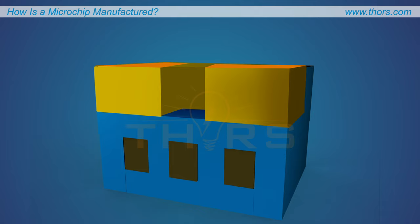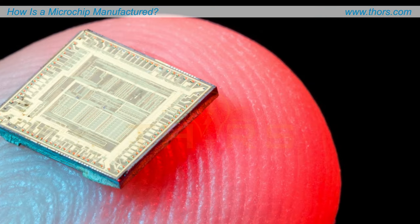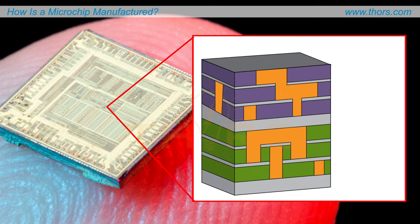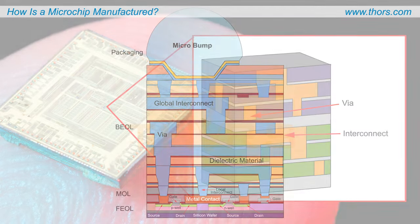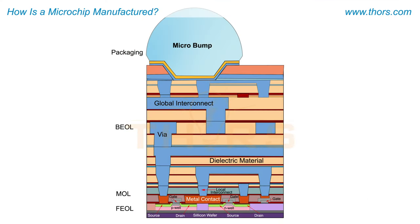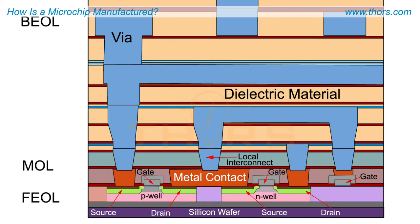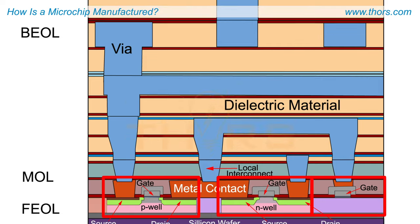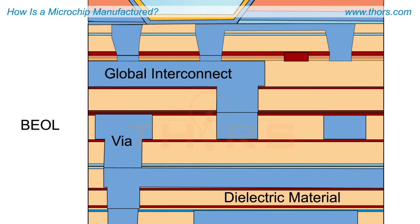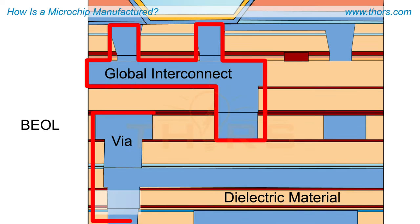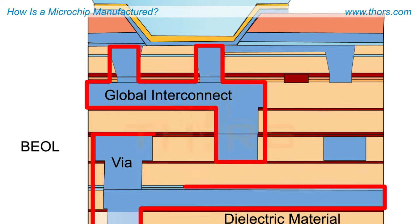The manufacturing processes also involve the creation of interconnects and vias. These components are responsible for linking the transistors and other electronic components, facilitating the flow of current from the front end of line, or FEOL, where the transistors are fabricated, to the back end of line, or BEOL, which consists of the layers and elements responsible for interconnecting the transistors.